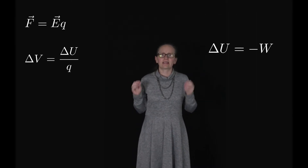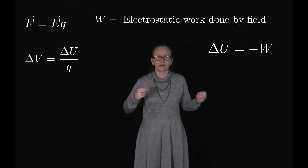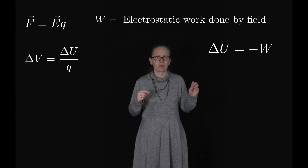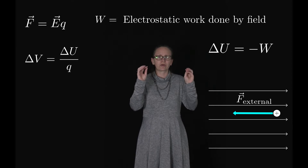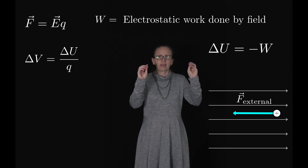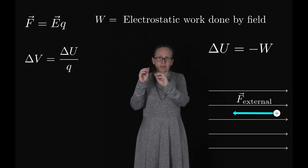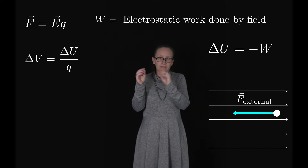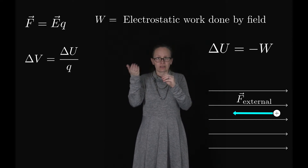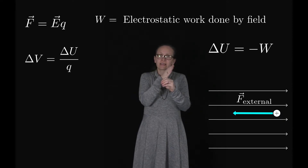The change in electrical potential energy ΔU is the negative of the electrostatic work done on the particle. If we think about this carefully, it makes quite a lot of sense. If we apply an external force onto our charge in an electric field in the opposite direction to the electric field, the external force is doing positive work on the particle because the force and displacement are in the same direction, while the electric field is doing negative work because it acts opposite to the displacement.